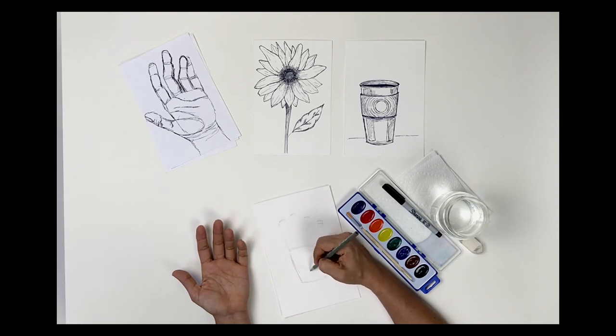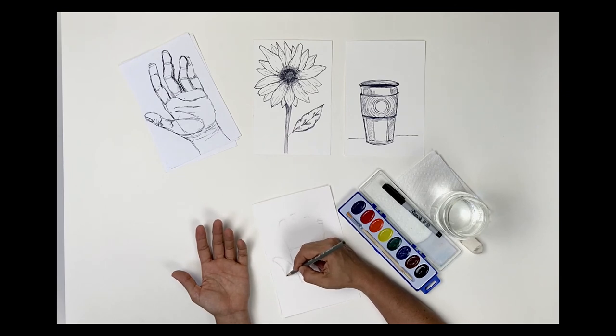I'm going to bring in this big muscle that forms the base of my thumb. With pencil, I can always come back in and erase.